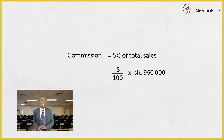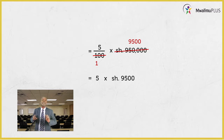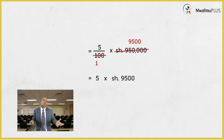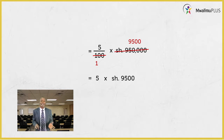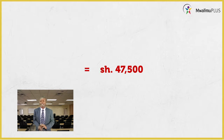Once you've written it that way, the next step is to simplify. Try to see how many times will numbers in the denominator divide into the numbers in the numerators. 100 will divide once to give you 1, and the same 100 will divide into 950,000 to give 9,500 times. What is left? 5 times 9,500. Multiply these two numbers and they give you the total commission that Cecilia got — 47,500 shillings.